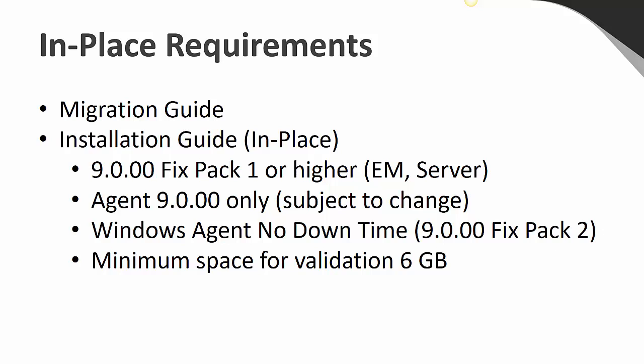With the in-place upgrade, you must be at version 9.00 with a minimum of FixPack 1 for both Enterprise Manager and Control-M Server. As of base 9.18, the agent must be version 9.00 before you can upgrade it. In an upcoming FixPack to 9.18, agents can be lower versions before they are upgraded — please check the release notes as FixPacks come out. For a Windows agent to use the no-downtime upgrade feature, it must be at a minimum of version 9 FixPack 2; otherwise, it will need to be stopped to get upgraded. Both of these agent requirements apply to both deployment and manual upgrades.